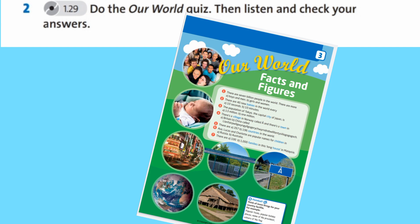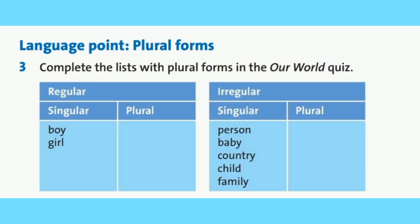7: There are 100 families in this longhouse in Malaysia. Complete this list with plural forms in the Our World quiz. Дополните эти списки множественной формой. Эти слова встречаются у нас в викторине, которую ты уже выполнил. Как мы образуем множественную форму у существительных, мы проходили ранее.